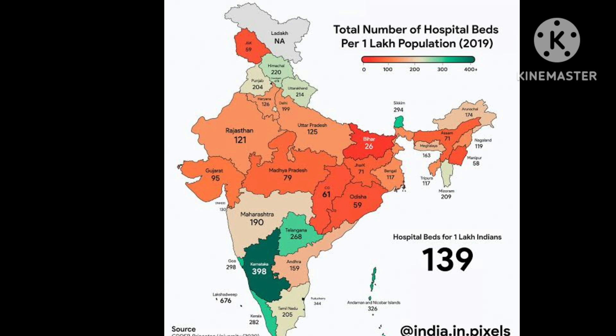Actually, the most is Lakshadweep with 676 beds per lakh people, which is very impressive. Ladakh data is not applicable. The best in the North is Sikkim with 294. Andhra Pradesh is the lowest in the South, Bihar is the lowest in the North and also the lowest in all of India — so Bihar needs to improve. Have a look.